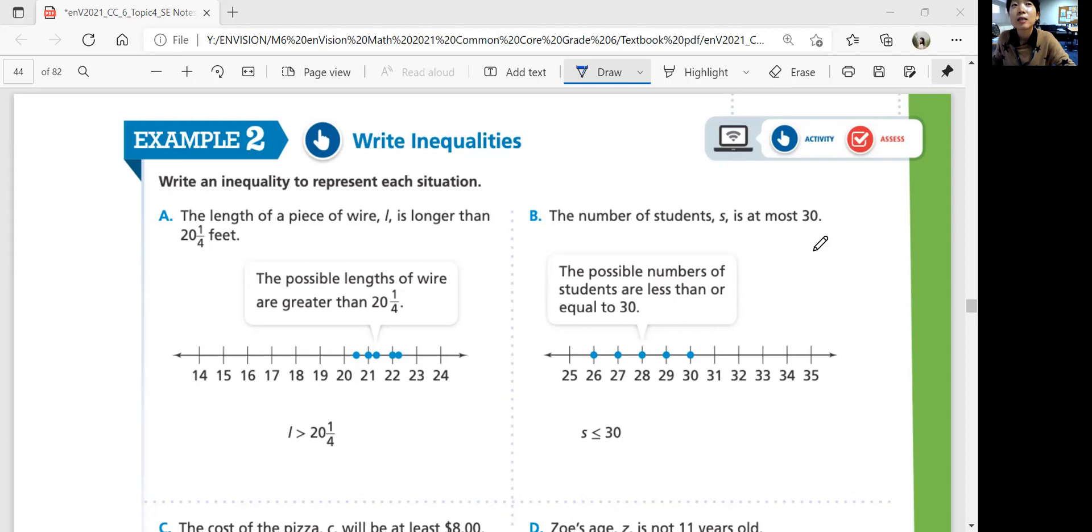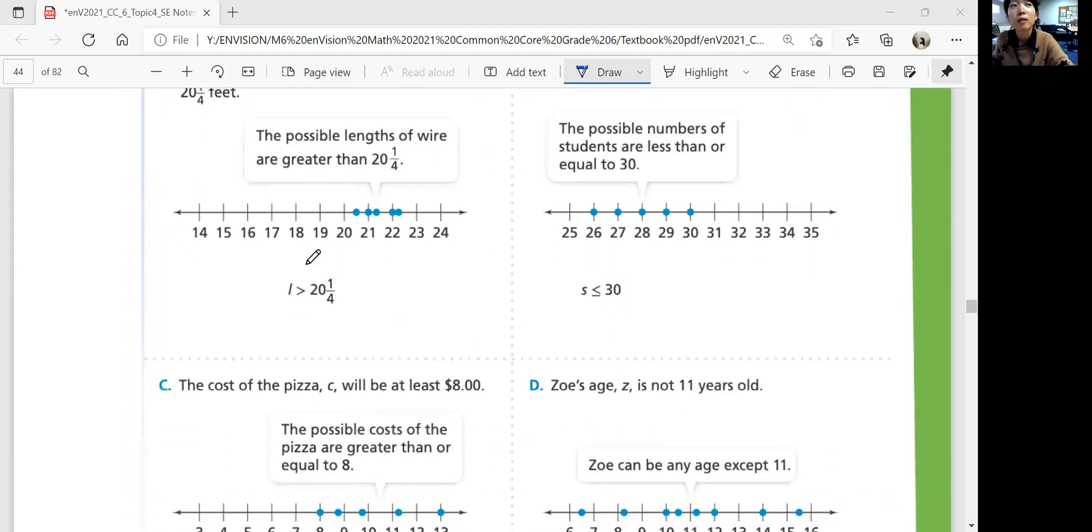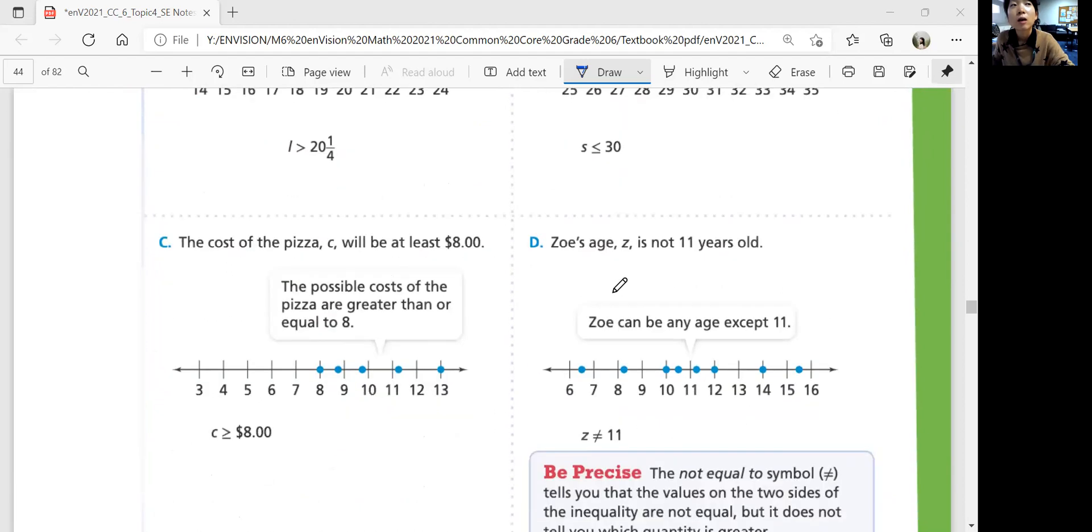Part B. The number of students S is at most 30. At most means at most it could be 30. So it includes 30 but it must be less than 30. Okay? So these are the inequalities. The cost of the piece C will be at least eight. At least means it also includes the number. Must be at least that number. Eight dollars.